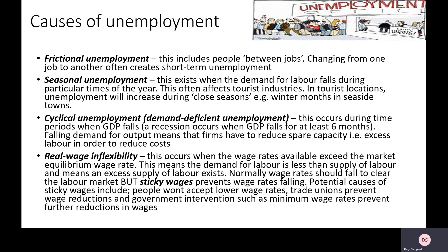Cyclical unemployment is another type of unemployment that often occurs in a recession — when GDP falls for at least six months. Logically, if firms have falling order books for their goods and services, they have spare workers they no longer need, so they shed those workers. For example, if a restaurant has fewer customers, they need fewer waiters and waitresses, so due to that drop in demand they need fewer staff.